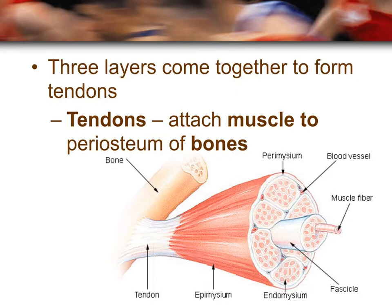The three layers — endomysium, perimysium, and epimysium — come together at the connection closer to the bone and form the tendon. The tendon is what attaches the muscle to the bone. The periosteum of the bone is the outer serous membrane of the bone.